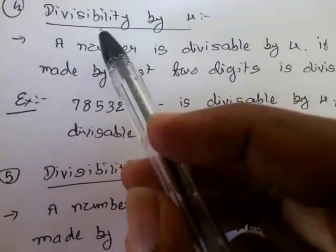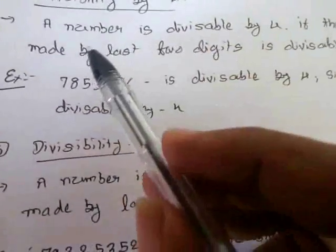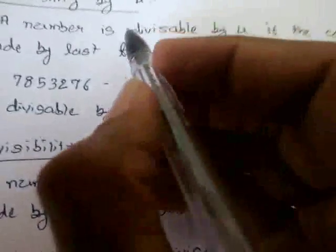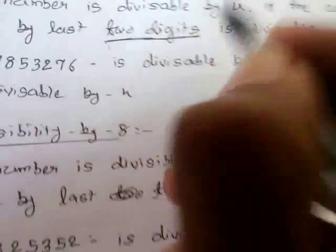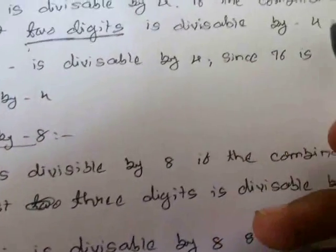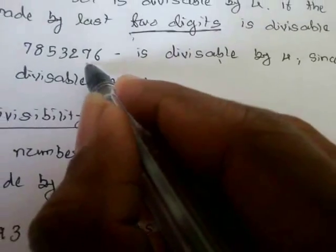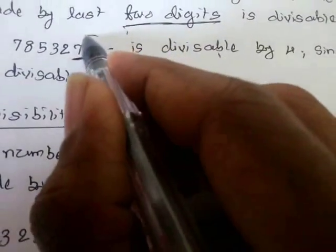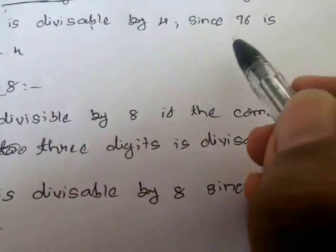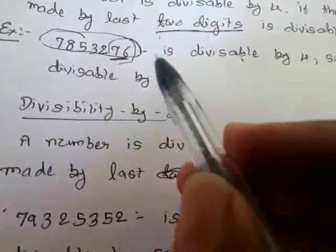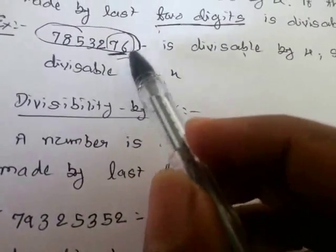The fourth rule is to check if the number is divisible by 4. The rule says a number is divisible by 4 if the combination made by the last two digits is divisible by 4. For example, this number is divisible by 4 since the last two digits form 76, and 76 is divisible by 4. So we don't have to divide the whole number by 4.